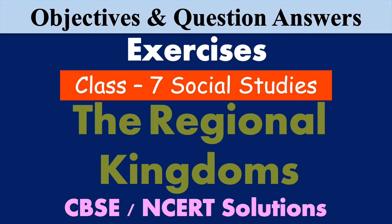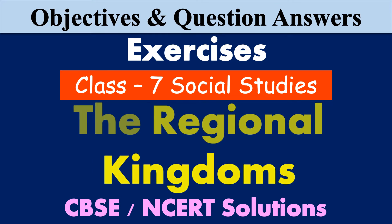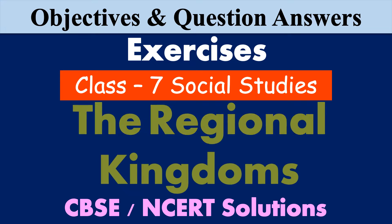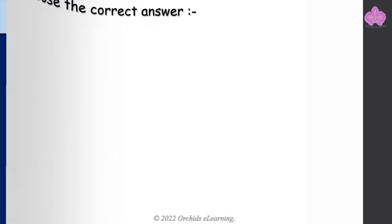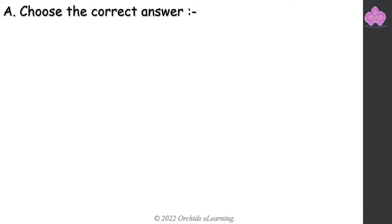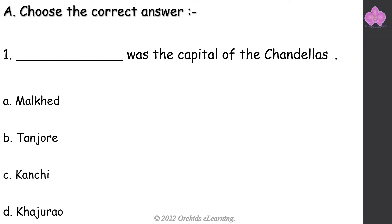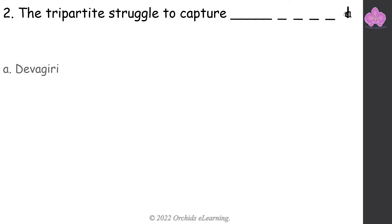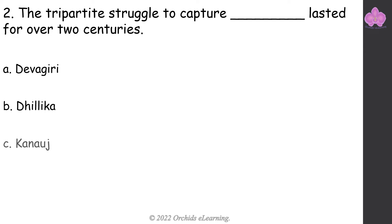The Regional Kingdoms — Class 7 Social Studies. Choose the correct answer. Khajuraho was the capital of the Chandellas. The tripartite struggle to capture Kannauj lasted for over two centuries.